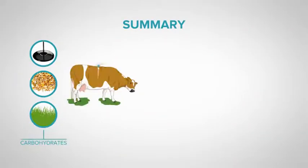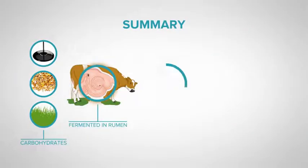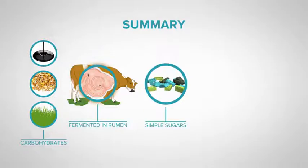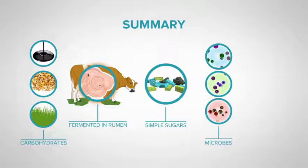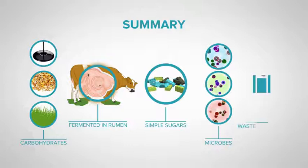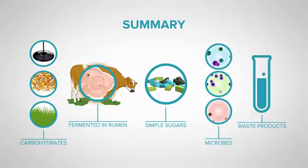So, in summary, carbohydrates are fermented in the rumen, and they are all broken down into the same simple sugars, but different microbes use these sugars to grow, and therefore produce different waste products or different volatile fatty acids.